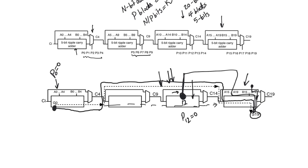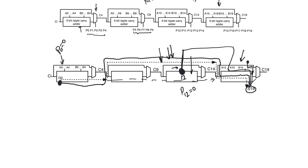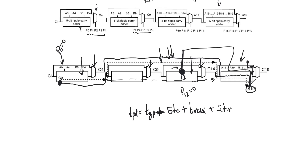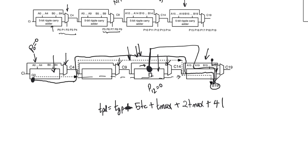The total delay of the adder starts with TGP to prepare generate and propagate from A and B. Then we pass through the ripple carry path of the first block — five bits, so plus 5·Tcarry — then through a multiplexer to select the ripple carry path, giving Tmux. We then pass through two bypass multiplexers in the middle for 2·Tmux, and finally through the last block's ripple carry path for 4·Tcarry plus Tsum to reach S19.